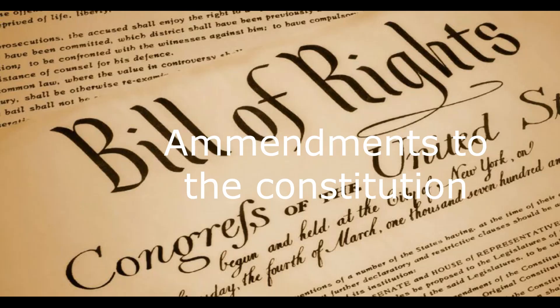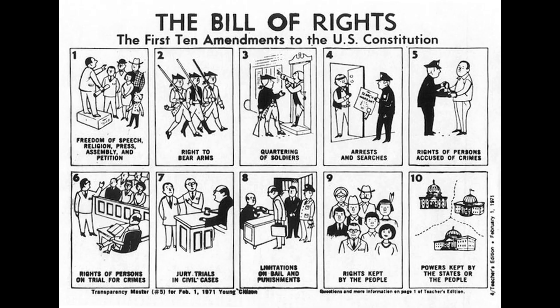Under the presidency of George Washington, 10 amendments to the US Constitution were passed by Congress and ratified by the majority of states of the Union. These 10 amendments are also known as the Bill of Rights because they guarantee the freedom and liberty of every US citizen — including freedom of speech, the right to carry a firearm, freedom of assembly, freedom of the press, and more.